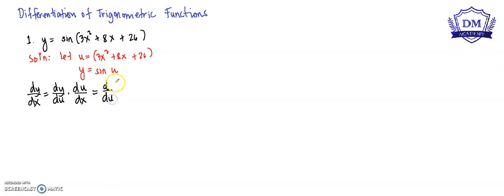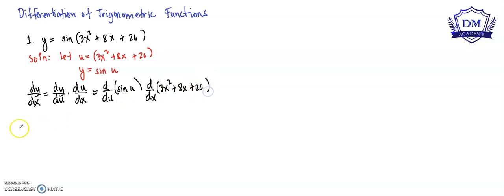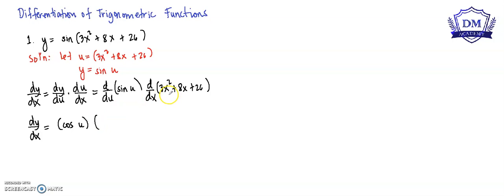This is equal to the derivative of y, which is sine u, with respect to u, multiplied by the d/dx of u, which is 3x squared plus 8x plus 26. So dy/dx is equal to the derivative of sine u, which is cosine u, multiplied by the derivative of 3x squared plus 8x plus 26.